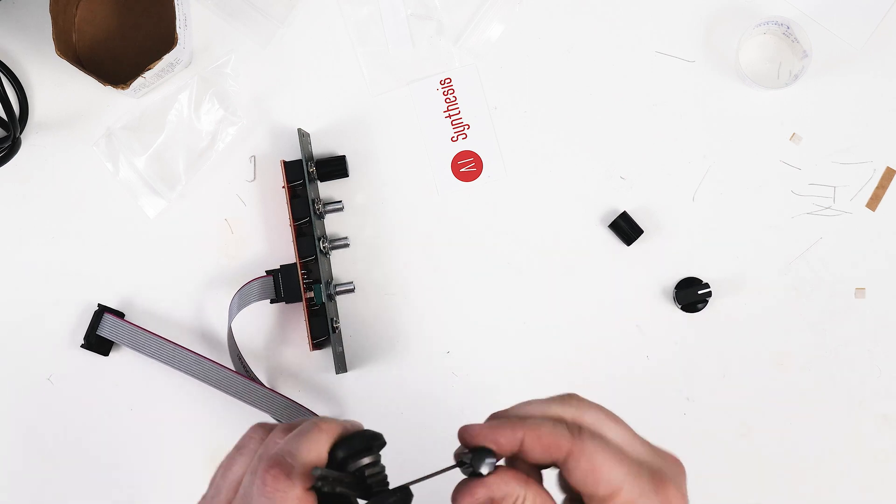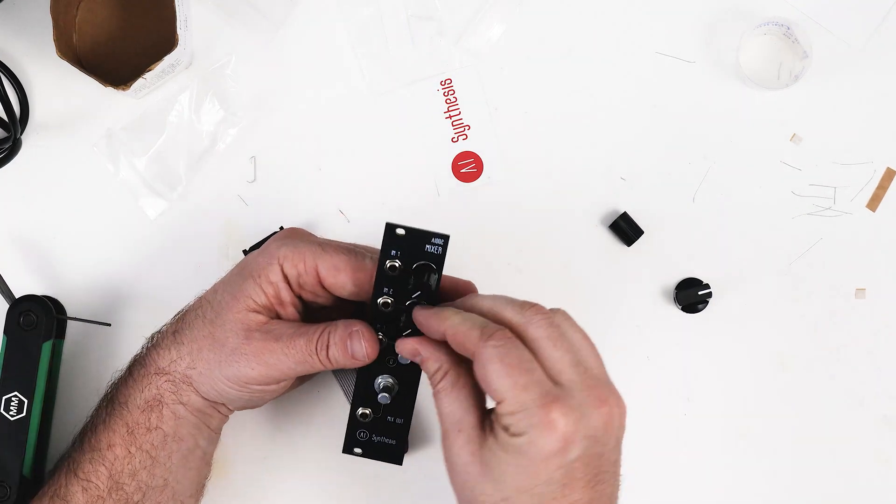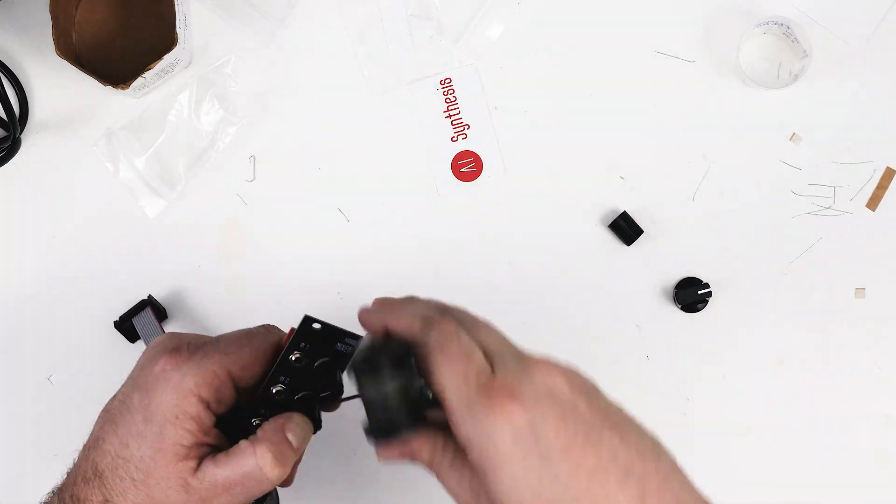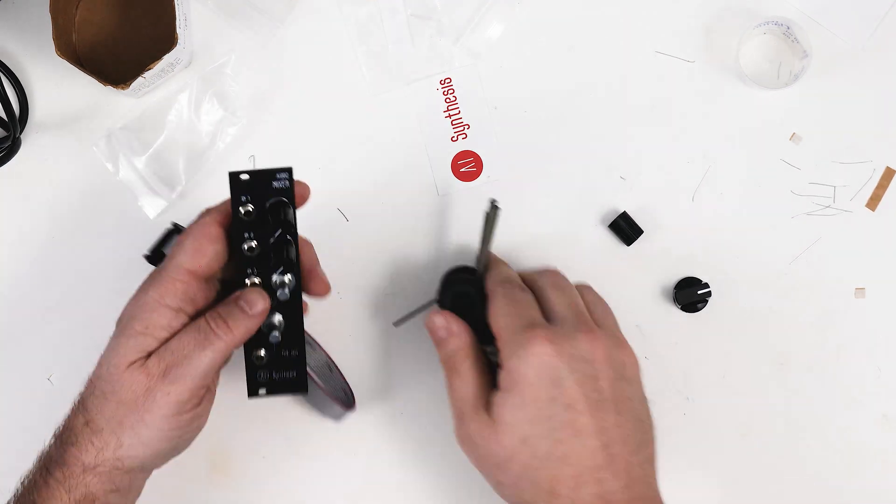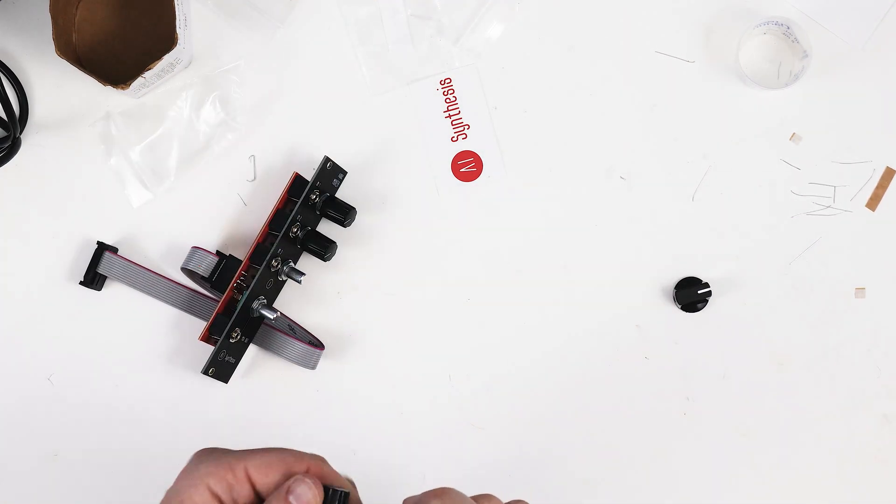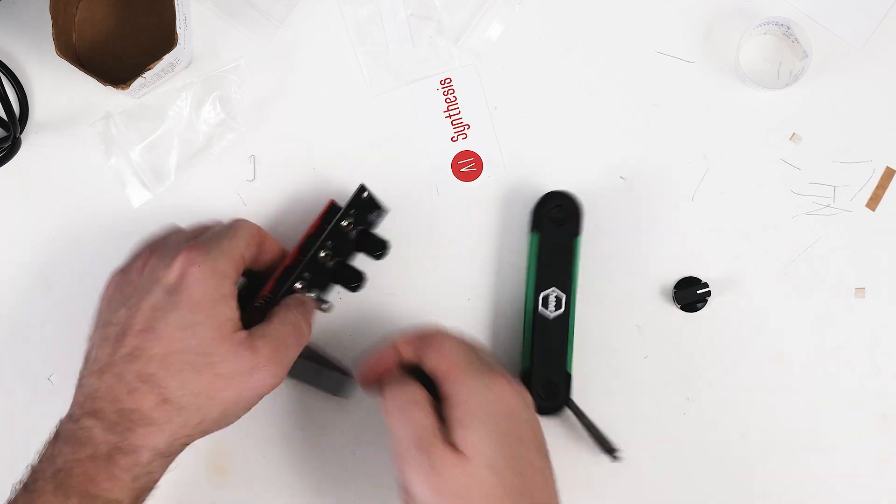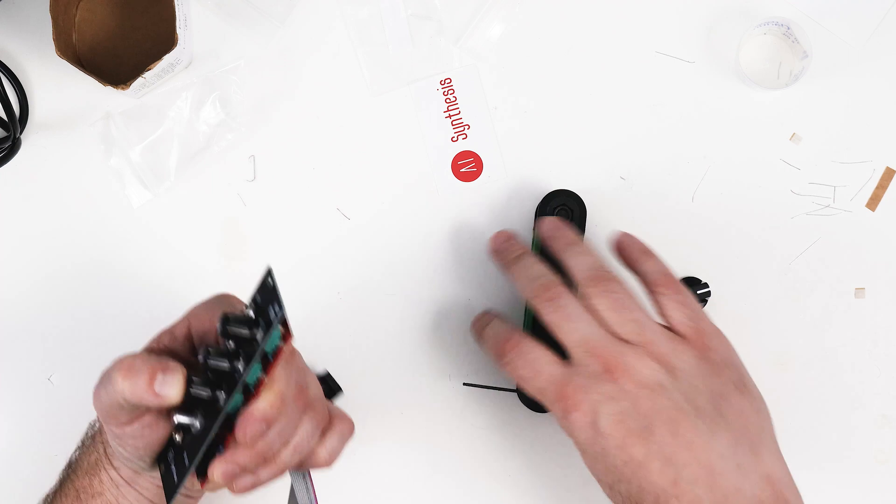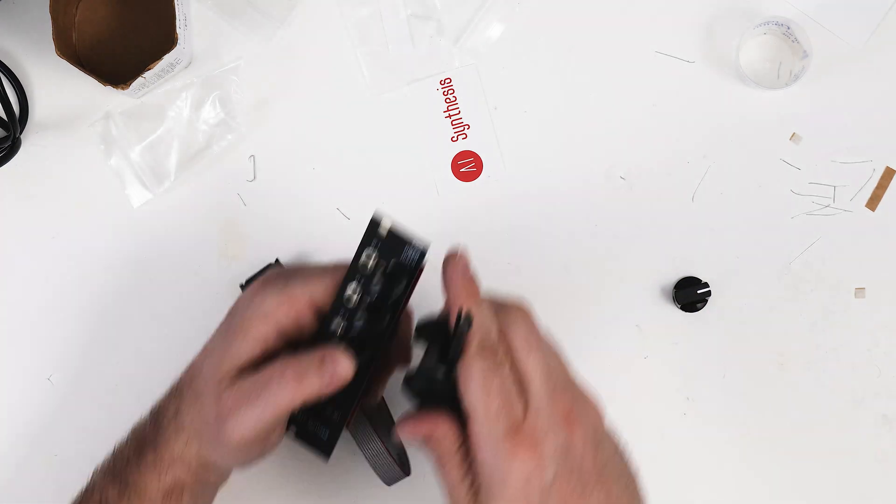Here, the knobs have set screws, and you needed to have an Allen key for it. I wasn't expecting that. This was the only Allen key that I had. This was the only Allen wrench that I knew where it was. And it was kind of hard to do it with this big, honking, Swiss Army knife type of Allen wrench key.